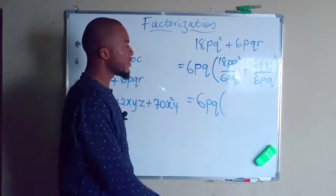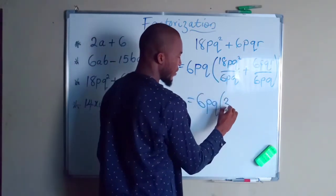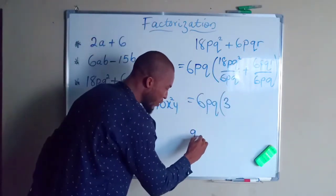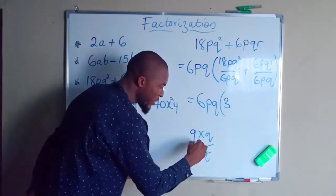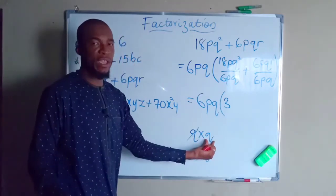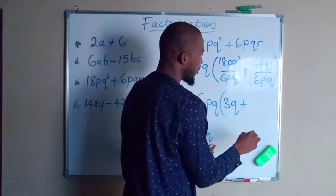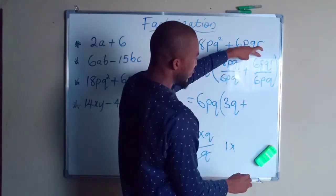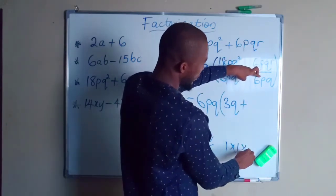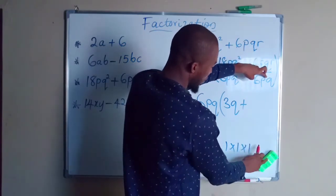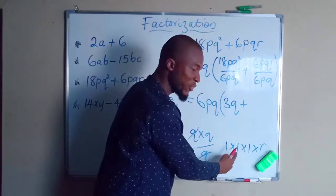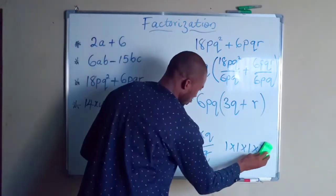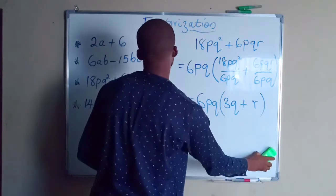We have 6pq outside the bracket. Inside: 18 divided by 6 is 3, p divided by p is 1, and q squared divided by q is q — because q times q divided by q cancels one q, leaving one q. For the second term: 6 divided by 6 is 1, p divided by p is 1, q divided by q is 1, and r remains. So the factorized form is 6pq(3q + r).